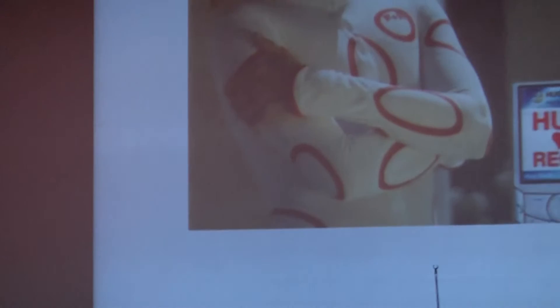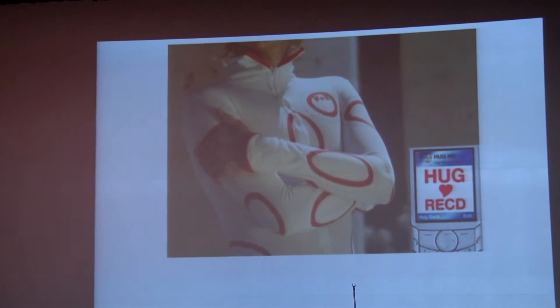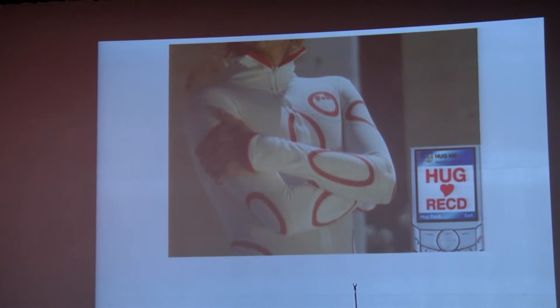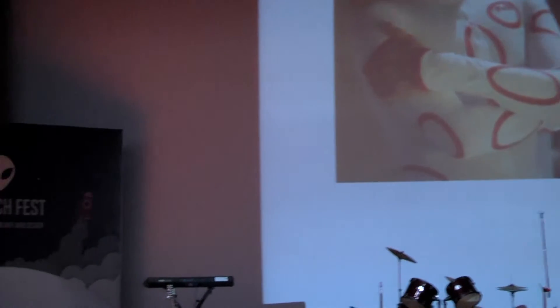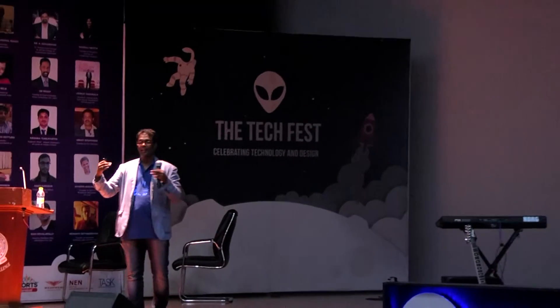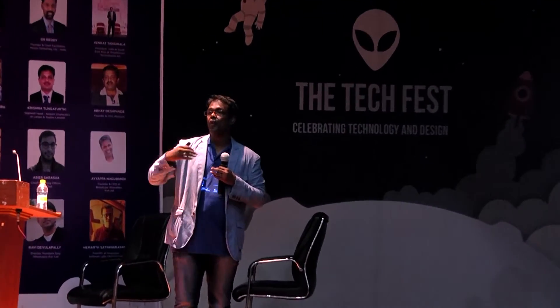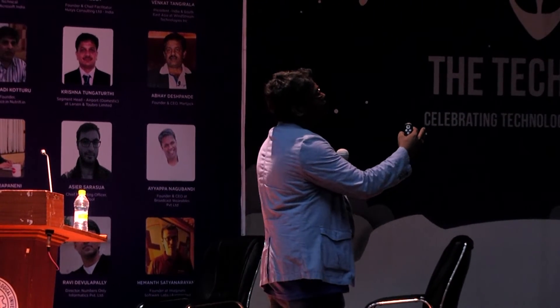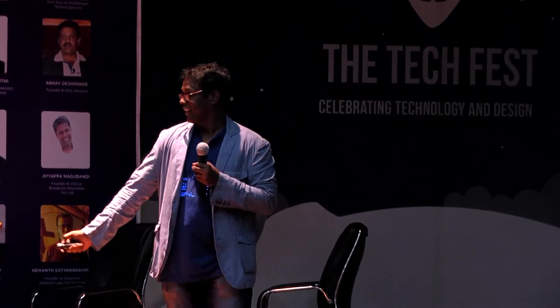This is called a hug shirt. When one person hugs another, the person being hugged feels sensation at a couple of places. With this garment, you can send a hug to somebody remotely. The red spots you see are actuators and vibrators. The other person just needs to wear this t-shirt and from a phone you send a hug.